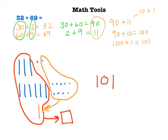In these two examples, I've used two different math tools, base 10 shorthand and mathematical equations. And in both examples, I used place value as a strategy in order to solve the problem.